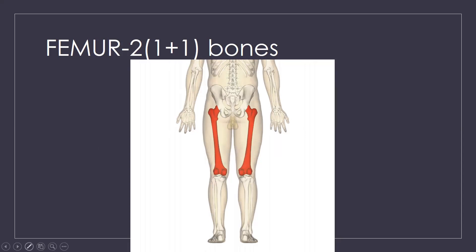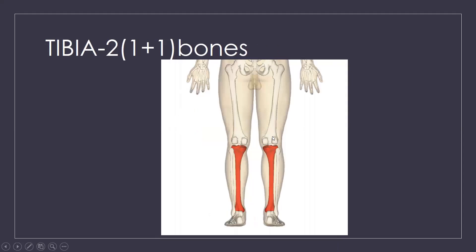The next bone is the tibia. You have two tibias — one on each side of your leg.